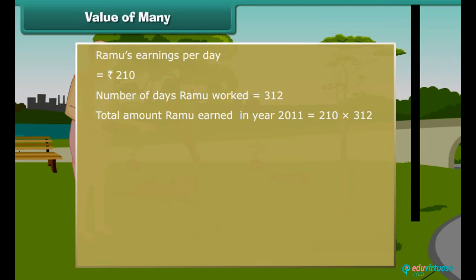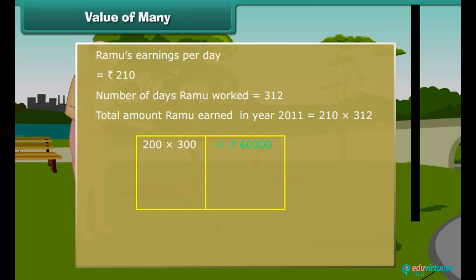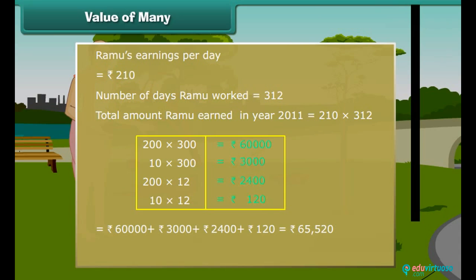Let us break the multiplication into 4 steps: first, multiply 200 and 300; then 10 and 300; then 2 and 12; then 10 and 12. Now we add up the products to get 65,520 rupees. Therefore, Ramu earned 65,520 rupees in the year 2011.